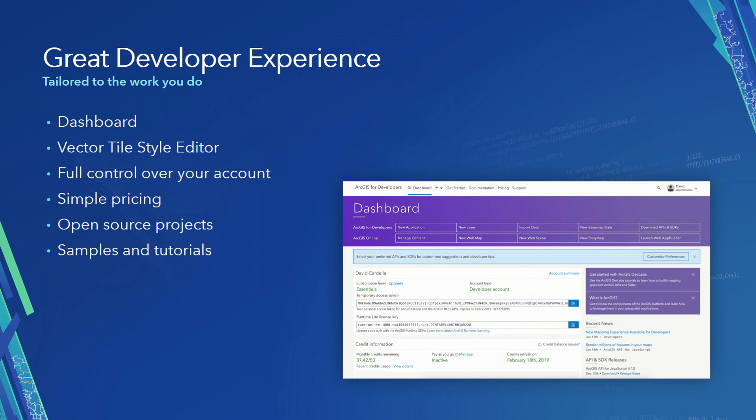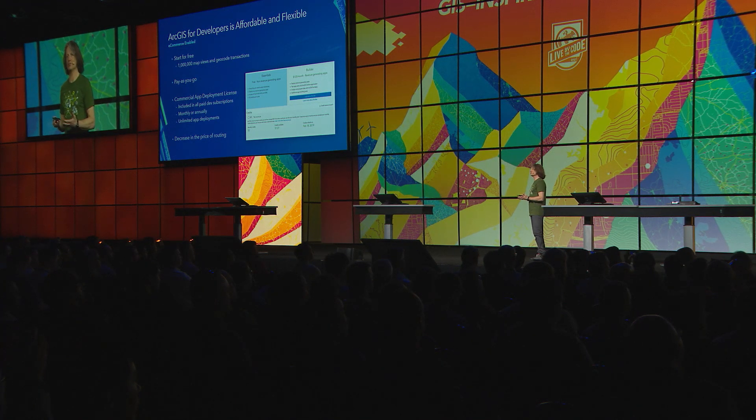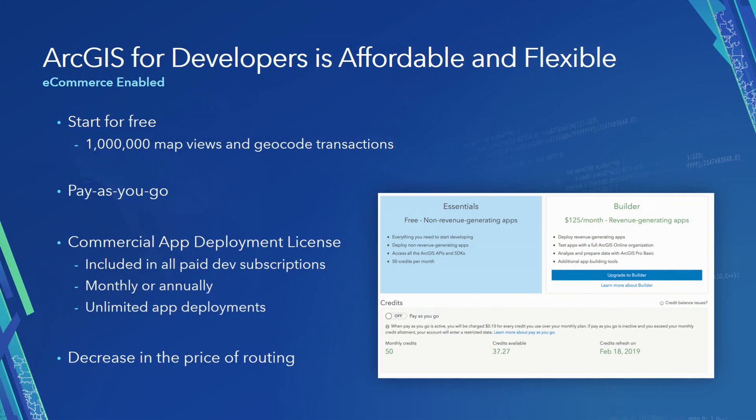We made a change to our developer experience back in January and introduced very affordable and flexible pricing. You can have over 1 million map views for free with your developer account. Anything beyond that, or if you're using some of the fee-paying services, we now have pay-as-you-go pricing for your credit usage. If you want to deploy your application commercially, you can do that with our builder plan, which is only $125 a month. We also significantly decreased the price of routing. So we're not only working on the technology, we're working on the business aspects as well to make you successful when you deploy your applications.